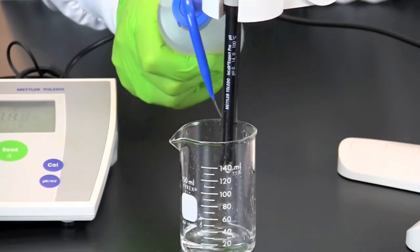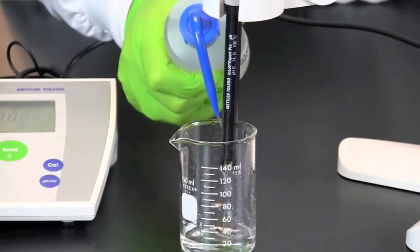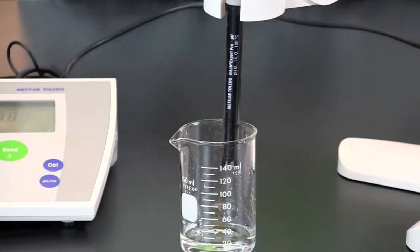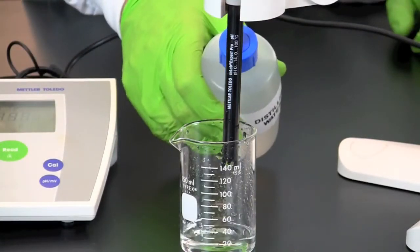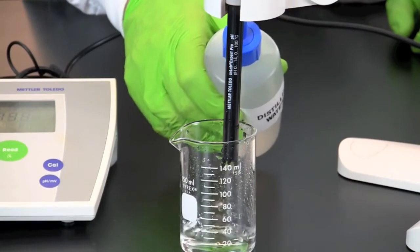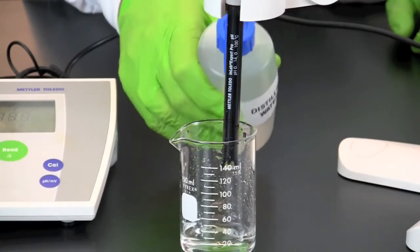pH meters must be calibrated each time to ensure the accuracy of measurements. Using the three different pH standards for calibration provides for a wide range of accuracy. You are now ready to measure the pH of an unknown solution.